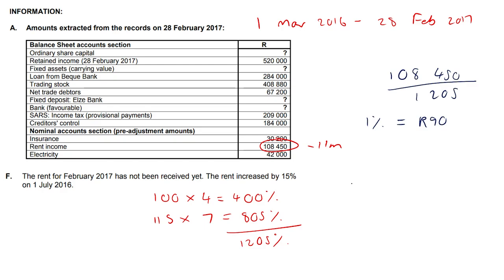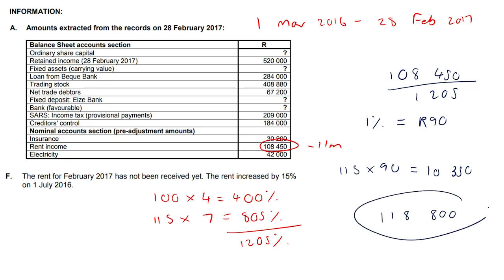So if we paid an additional 115% — don't use the percentage sign, don't use decimals — 115 times 90 gives us 10,350. That amount of 10,350 is representative of 115% and is the amount owed to us. That is income receivable, so you would add that to your rent income in your income statement: 108,450 plus 10,350 gives us 118,800, which you plug into your income statement.